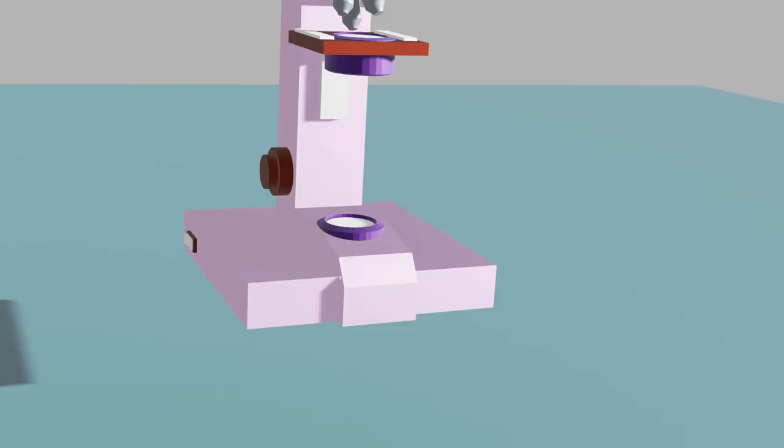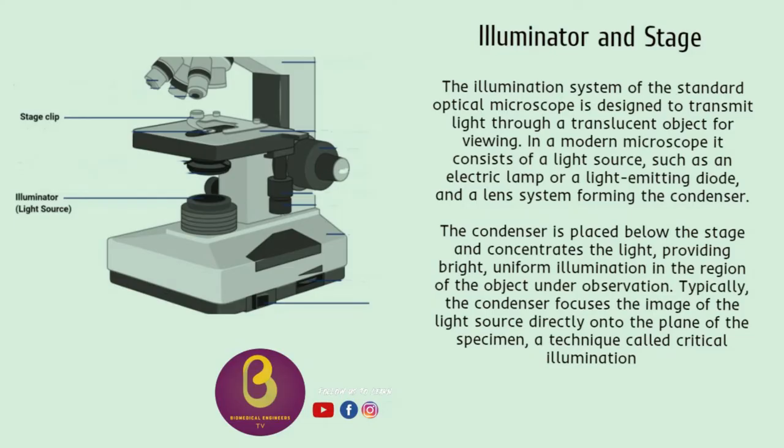The fourth component is the illuminator and the stage. The illuminator is the light source for a microscope. A compound light microscope mostly uses a low voltage bulb as an illuminator. The stage is the flat platform where the slide is placed.